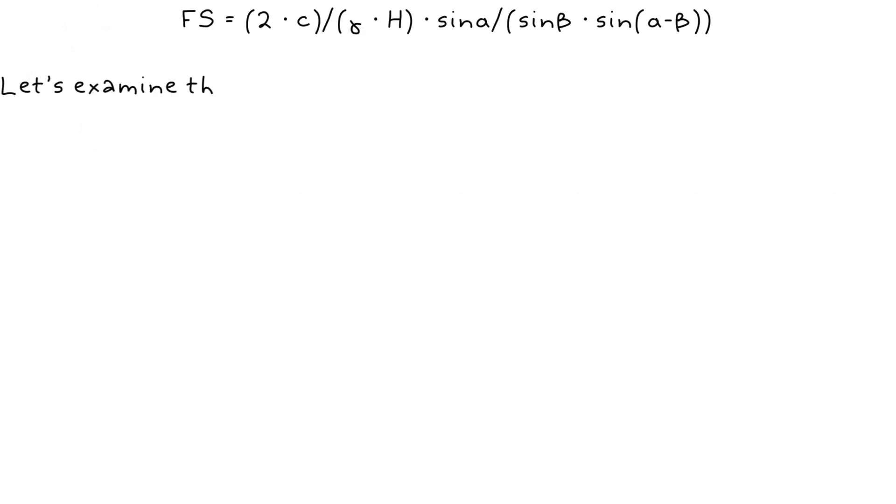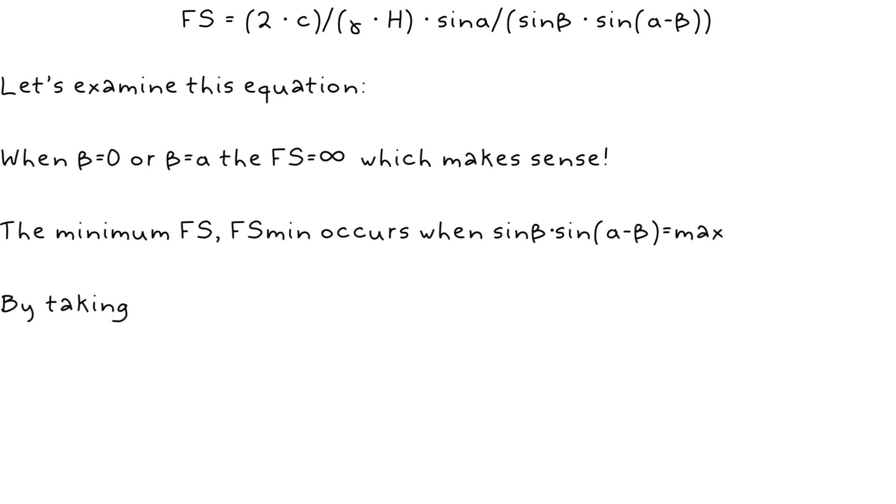Examining the equation we just got, when beta is equal to 0 or alpha, the factor of safety is infinite, which makes sense. It also makes sense that the minimum factor of safety is when the denominator, sin beta times sin alpha minus beta is max.